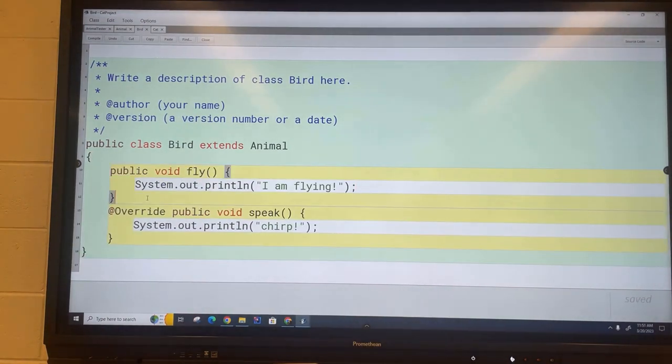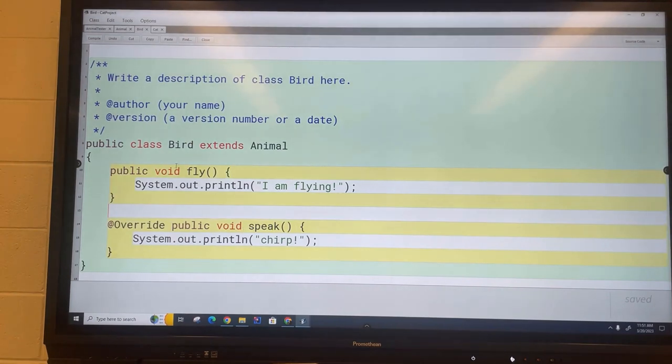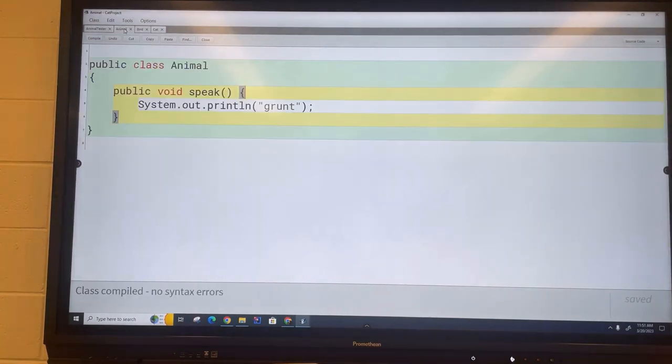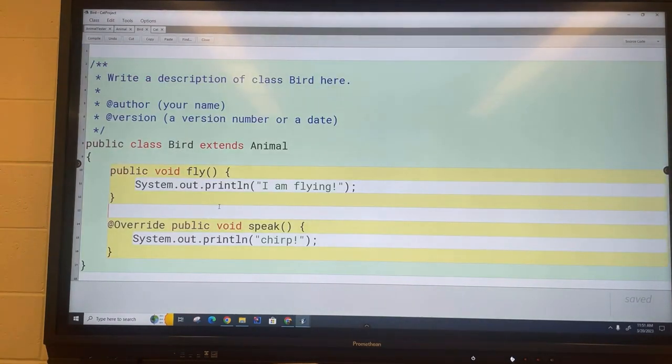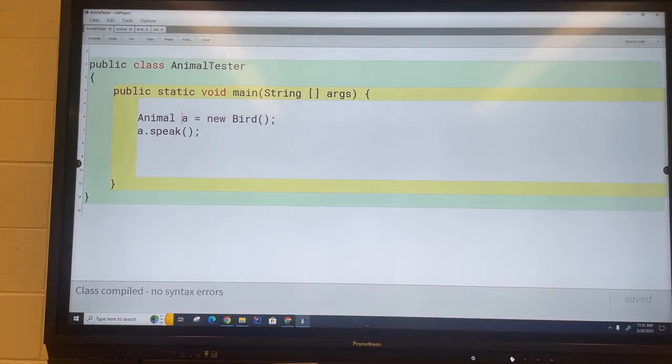So here is my fly method. Now I want you to notice that the animal class doesn't have a fly method, you see that right? Doesn't have a fly method but the bird does now because you know that birds fly but most animals don't. So now I want you to notice something strange when I go over here and I go fly.